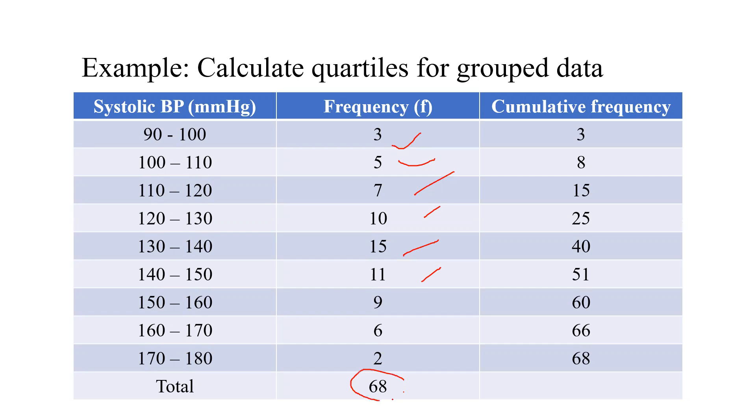So 68 is the sum of the total frequency, means total number of patients is 68, and there are the groups of systolic blood pressure class-wise, class interval is given. So this data is given. Now our interest is to calculate the quartiles, so then we will create again cumulative frequency column.